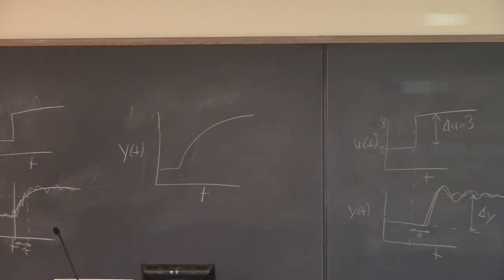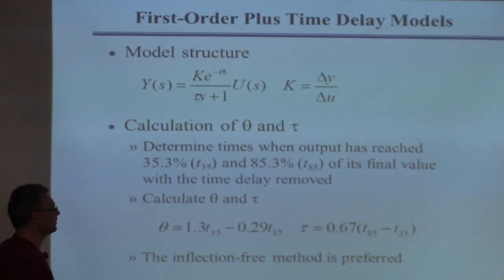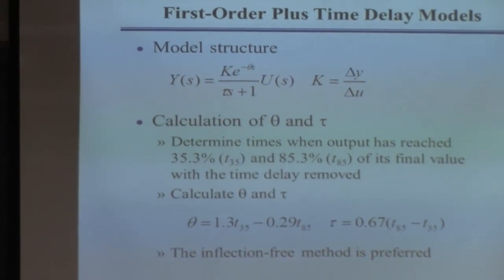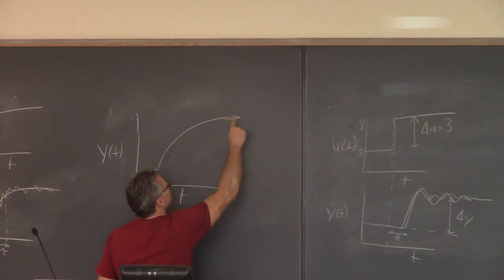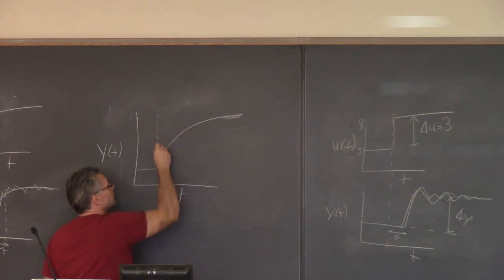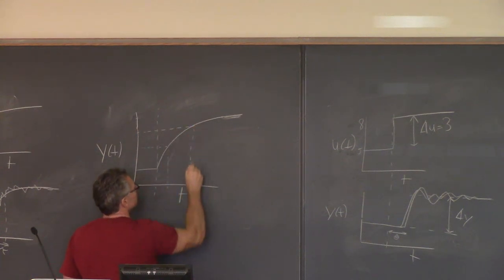What you have to do is find these three times. Remember last time we found when it was 63.2% complete? Now you have to find two points on the response: when it's 35% complete and when it's 85% complete. Notice it says with the time delay removed. If you change the input at time equals zero, I'm finding when I got to 35% complete - let's say that's here - and then 85% complete is somewhere like this.